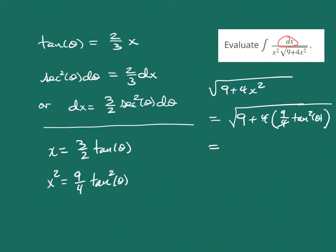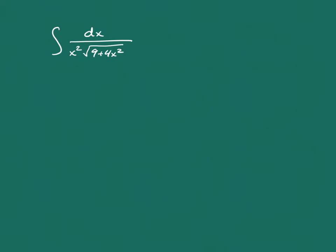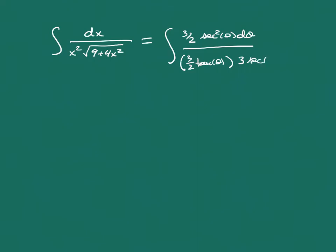Once we clean this up, the 4s cancel and we get the square root of 9 times (1 plus tangent squared). The square root of 1 plus tangent squared becomes square root of secant squared, which taking the square root gives us 3 times secant of theta. So now we're ready to convert all pieces: dx becomes 3/2 secant squared of theta d theta, x squared becomes (3/2 tangent θ) squared, and the square root becomes 3 secant of theta.